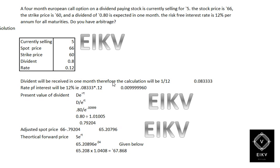Now the dividend will be received in 1 month. Therefore, the calculation would be 1 month divided by 12 months, which gives 0.08333. So the rate of interest is 12%, and 0.08333 into 0.12 will give you 0.00999.